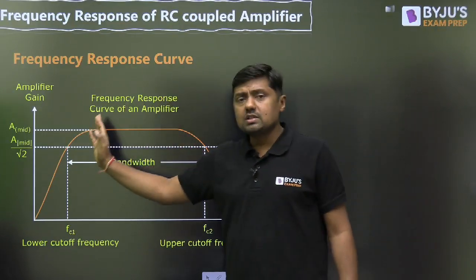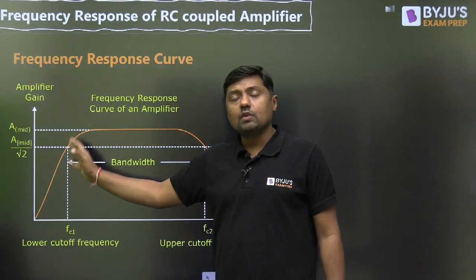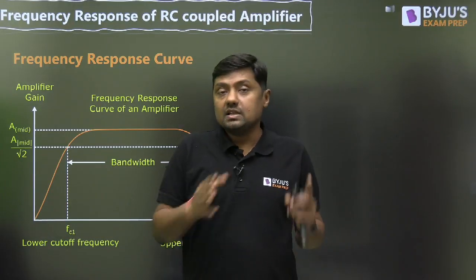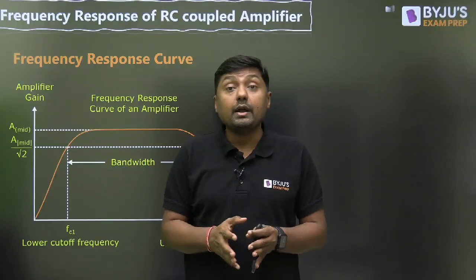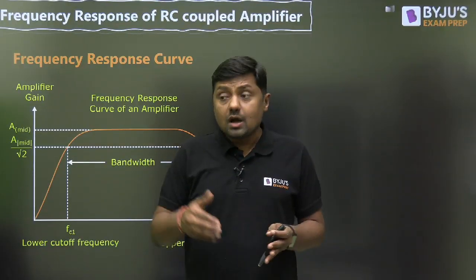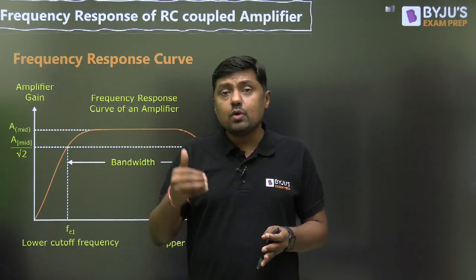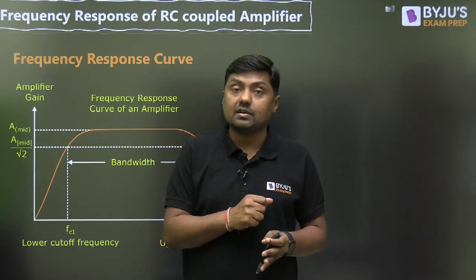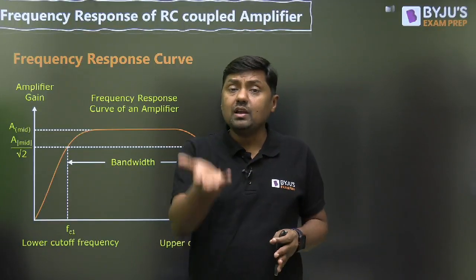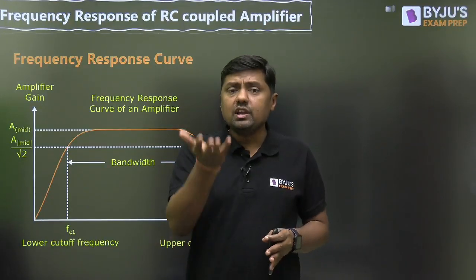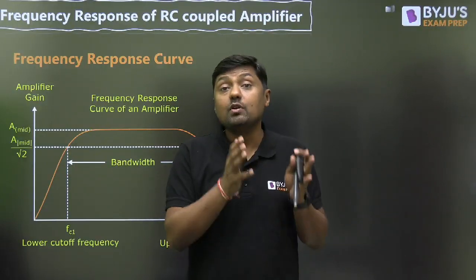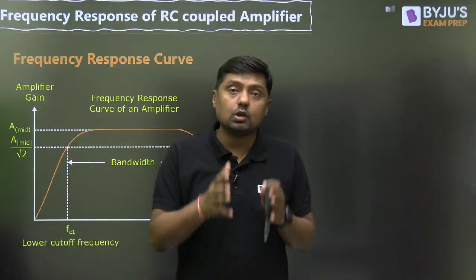At the lower frequency side, the gain reduces due to coupling capacitors CC1, CC2, and bypass capacitor CE. Because ideally CC1, CC2, and CE should act as short circuit. But when we are decreasing the frequency, impedance will increase. When impedance increases, all the capacitors will act as open circuit and they will block the signal. That is why the gain will reduce.